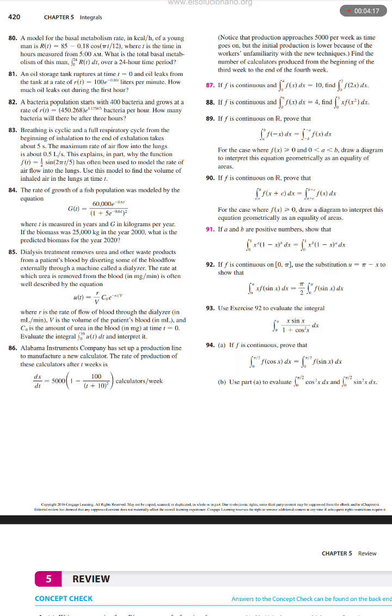Dialysis treatment removes urea and other waste products from the patient's blood by diverting some of the blood flow externally through a machine called a dialyzer. The rate at which urea is removed from the blood in milligrams per minute is often well described by the equation u(t) equals r over V times C sub naught times e to the power negative rt over V, where r is the rate of flow of blood through the dialyzer in milliliters per minute, V is the volume of the patient's blood in milliliters, and C sub naught is the amount of urea in the blood in milligrams at time t equals zero. Evaluate the integral from 0 to 30 of u(t) dt and interpret it.